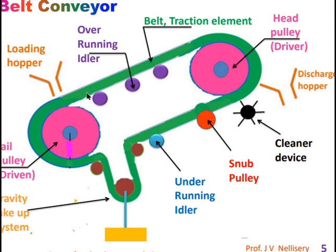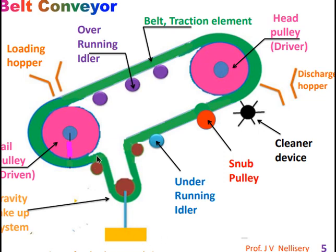The material travels on the belt and is unloaded into the discharge hopper. The red snub pulley increases the angle of lap with respect to the driver pulley where the motor is connected. The black cleaner device removes any material stuck to the belt during the bottom run. The gravity take-up system uses three pulleys with a load applied so that belt tension is always maintained as the belt stretches due to creep.